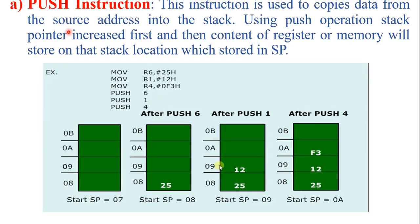Now I will explain the push and pop instructions with the help of an example. First is the push instruction. If we want to store data into the stack area of the 8051 microcontroller, that operation is called push operation, performed with the push instruction. This instruction is used to copy or store data from the source address given in the instruction into the stack area. The source address can be any register or any memory location. Before pushing data into the stack area, the stack pointer register is incremented by one automatically, and then the content of the register or memory is stored at that stack location pointed to by the stack pointer.